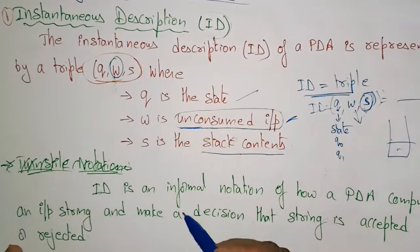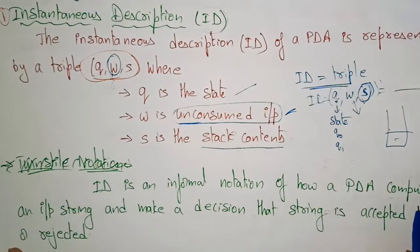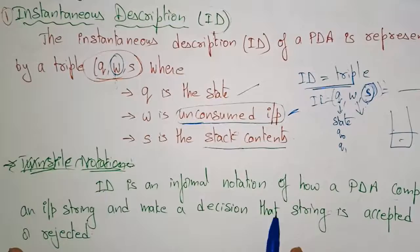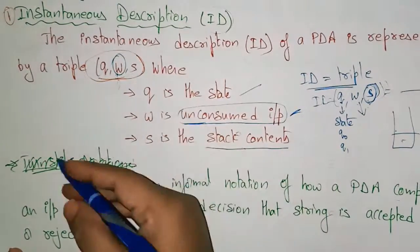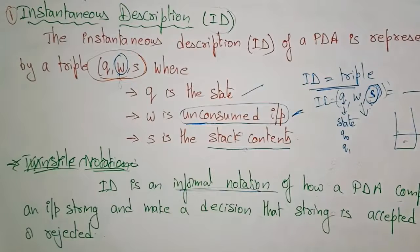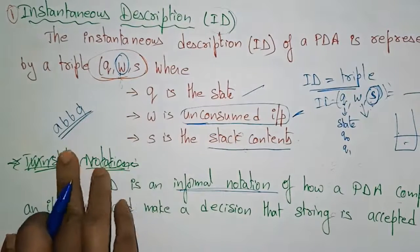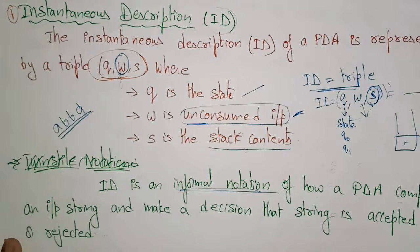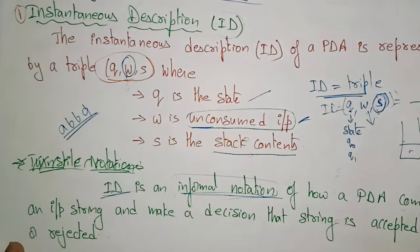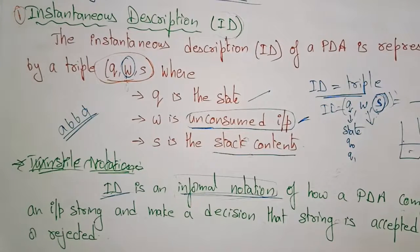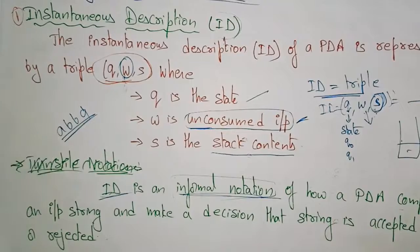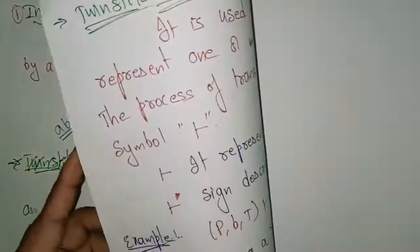The ID is an informal notation of how a PDA computes an input string and makes a decision — whether that string is accepted or rejected. This triple q, w, s is informal notation, not formal notation. Just for the sake of solving the problem, whether the string is accepted or rejected, the PDA computes the input string — for example, 'abba' — using this informal notation, ID, to make that decision.